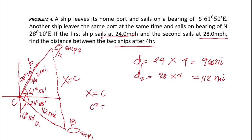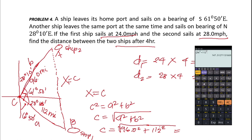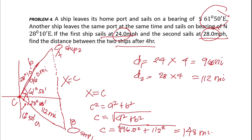C squared equals A squared plus B squared. C equals the square root of 96.0 squared plus 112 squared. Computing in a calculator and rounding to three significant figures: the answer is 148 miles, because the preceding digit is odd and we round up from 0.5. So the distance between the two ships after four hours is 148 miles.